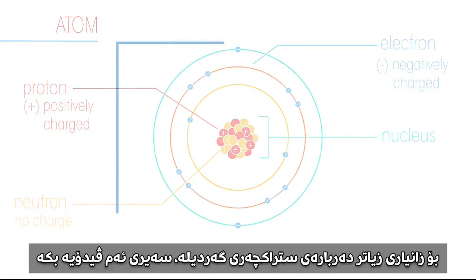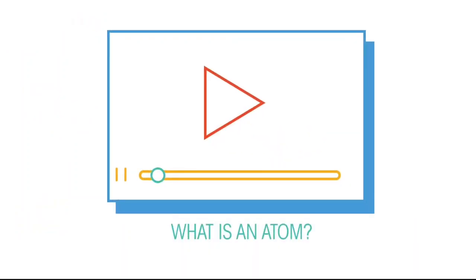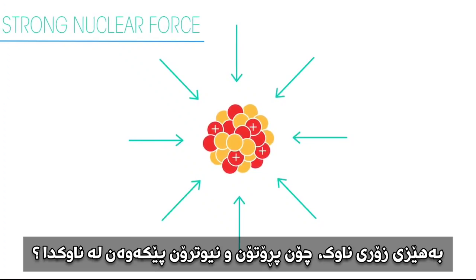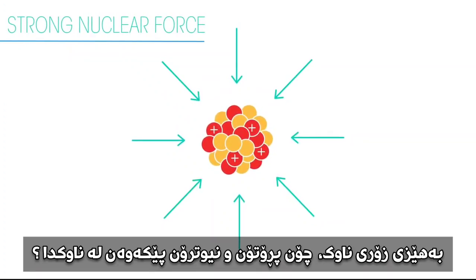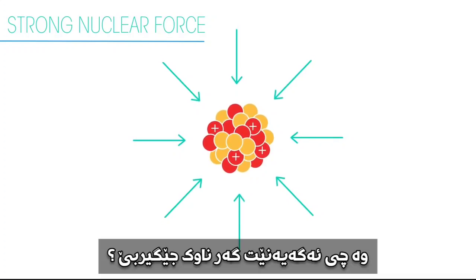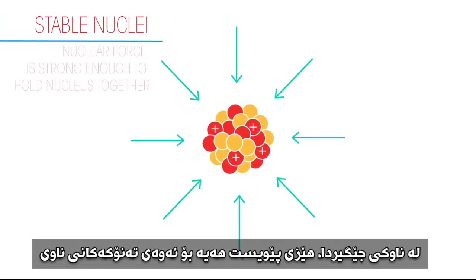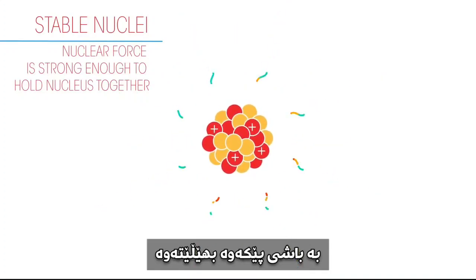For more information on atomic structure, watch this video. A strong nuclear force holds the positive protons and neutral neutrons together in the nucleus, and is what determines if a nucleus is stable. In stable nuclei, the force is strong enough and brings sufficient energy to hold the nucleus together permanently.